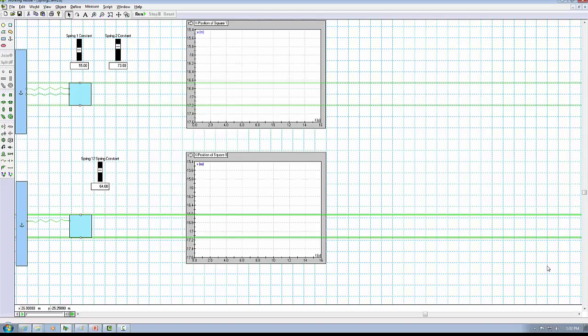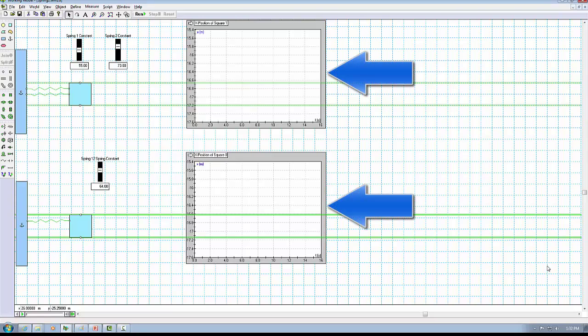The simulation is set up in Working Model 2D. The measurement windows are going to monitor the position of the masses. These two bars control the spring constant of each of the parallel springs, and this bar controls the equivalent spring constant.